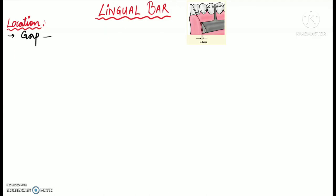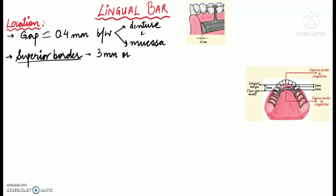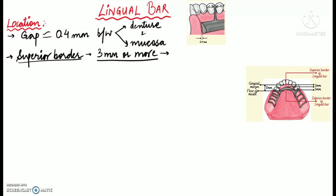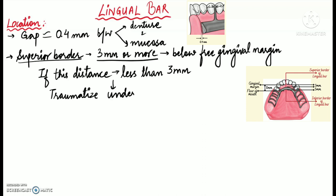Regarding the location of this connector, there should be a gap of approximately 0.4 millimeters between the denture and the mucosa, as shown in the diagram. The superior border of the lingual bar should be at least 3 millimeters or more below the free gingival margin. If it is closer than 3 millimeters, there are increased chances of traumatizing the underlying tissues.